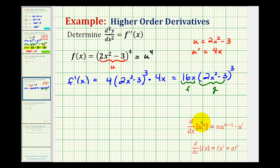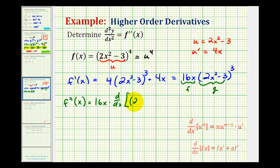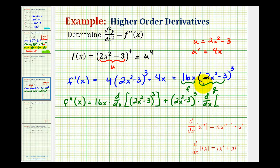Let's start by writing out the product rule — it's stated here at the bottom for review. The second derivative is going to be equal to the first function f times the derivative of the second, or the derivative of g. Notice that to find the derivative of this part, we'll have to apply the extended power rule which includes the chain rule again. Plus the second function g times the derivative of the first, or the derivative of f.